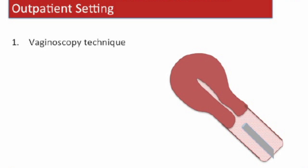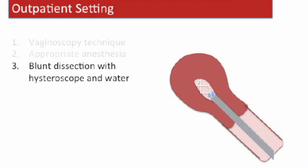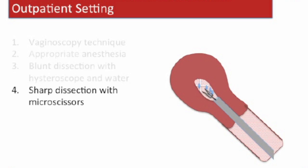We employ the following approach when performing outpatient hysteroscopic lysis of adhesions. Vaginoscopy is used to attain access to the uterine cavity. Patients are offered several anesthetic options, including non-steroidal anti-inflammatories or IV sedation. Depending on the location of the adhesions, it may be reasonable to start with blunt dissection using gentle pushing with the hysteroscope and pressure of the flowing saline to break apart the adhesions. Sharp dissection with scissors is used to break apart dense adhesions.